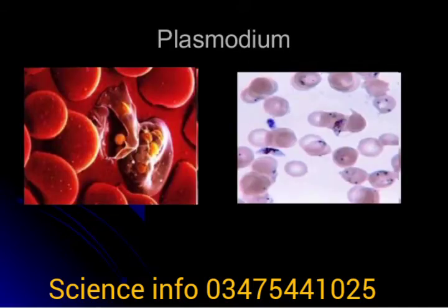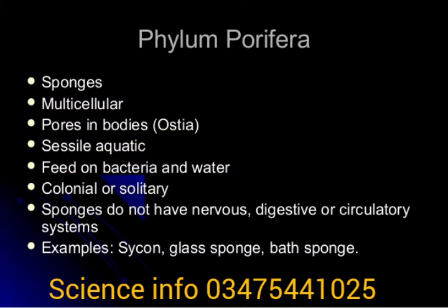Plasmodium is also a protozoan. Porifera includes sponges — they are multicellular with pores. Porifera are aquatic, feed on bacteria and water, and can be colonial or solitary. They don't have a nervous system, digestive system, or circulatory system. Examples are glass sponge, bath sponge, and others.